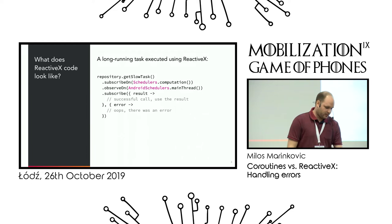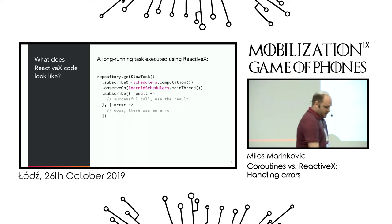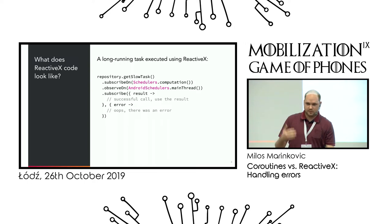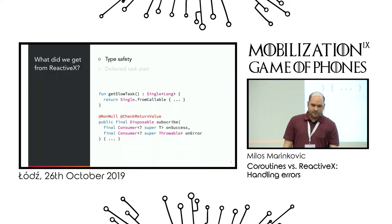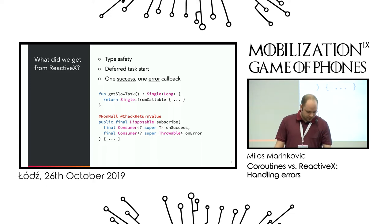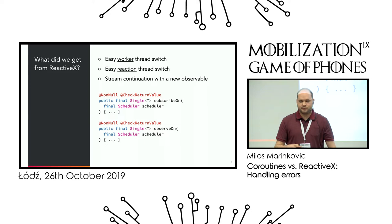Let's quickly look at what the code looks like with Rx. So we have some repository, we've fetched something that takes a while to complete. We can move it to another thread. We can come back to the main thread. We have exactly one success callback and exactly one error callback, which was very convenient. One of the big benefits of Rx was type safety — at compile time you could be sure that this code would deliver a certain type of result. Same goes for errors. You could handle errors, defer starting your tasks, subscribe on different threads, and specify your own thread pool.